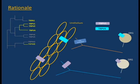TRPV4 is mainly expressed in the urothelium. When activated by stretch, it induces ATP release which will activate capsaicin-sensitive neurons. Although TRPV4 is present in the dorsal root ganglion neurons, it was never observed in the bladder nerve fibers.